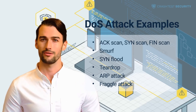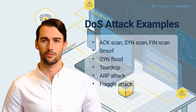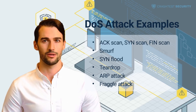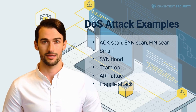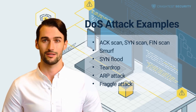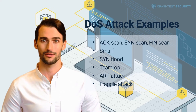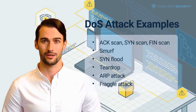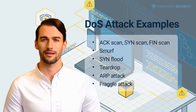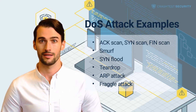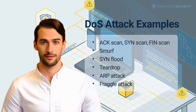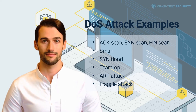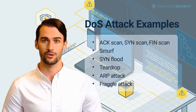In a smurf attack, the malicious party will target a network whose configuration allows packets to be sent to all devices on the network at once. That is accomplished by sending internet control message protocol packets to the IP broadcast address of the network, whereby they reach all computers.